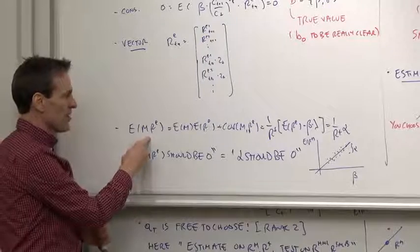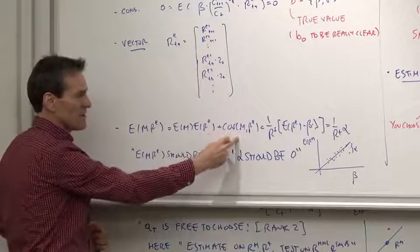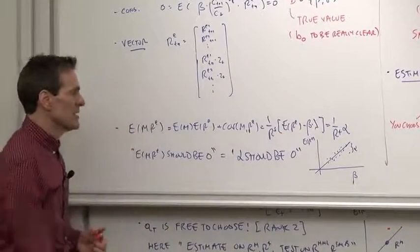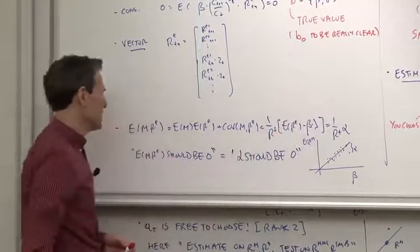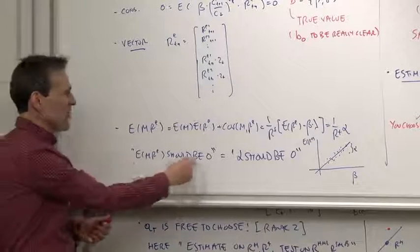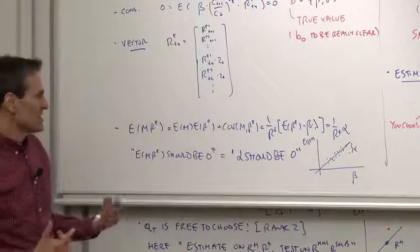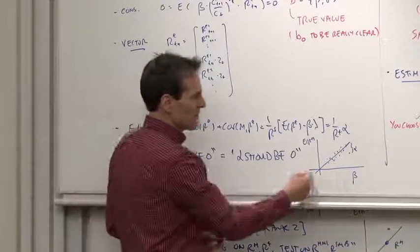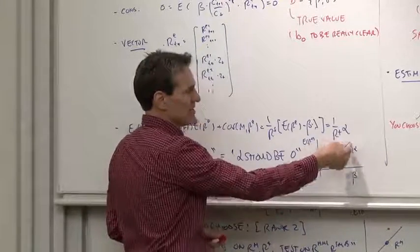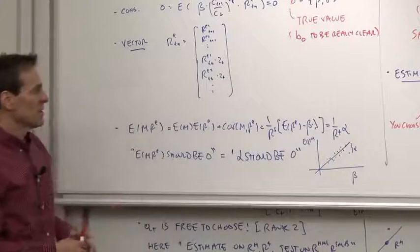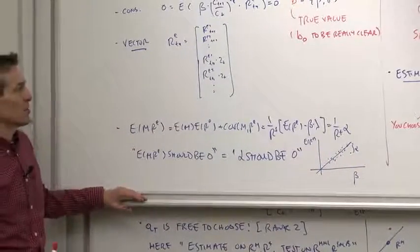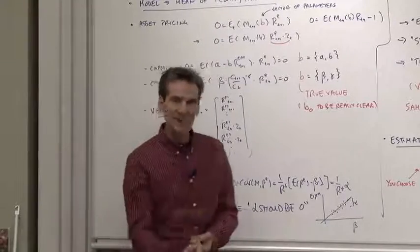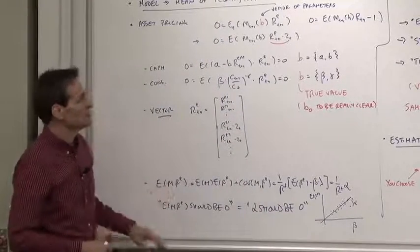If you want to relate this back to traditional asset pricing, remember E of MR. E of MR is E of M E of R plus the covariance. We can express that as expected returns minus beta times lambda. That is what we call alpha. When we say E of MR should be equal to zero, it's the same thing as saying the alphas should be equal to zero. The model says those alphas should all be zero.